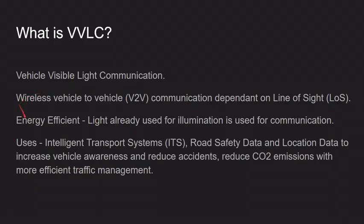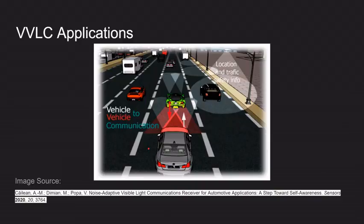Vehicle visible light communication is an energy efficient and wireless vehicle-to-vehicle communication system dependent on line of sight. It's used in intelligent transport systems for road safety and for location data for better traffic management.